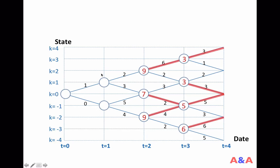At date 1, if you are in state 1, compare 2+9 versus 3+7. The former is 11, the latter is 10 — up is better, value is 11. If you are in state negative 1, compare 5+7 and 4+9; the latter gives 13 — that's better. These values of 11 and 13 are the value guaranteed at date 1 depending on which state you are in, assuming optimal behavior afterward.